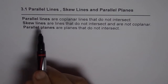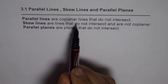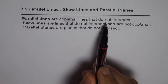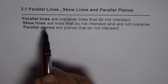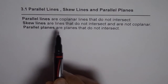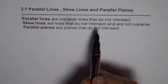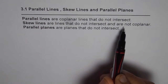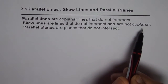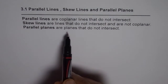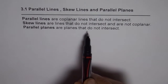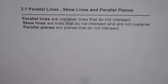Parallel lines are coplanar lines that do not intersect. Skew lines are lines that do not intersect and are not coplanar. Parallel planes are planes that do not intersect. These are the three basic definitions.